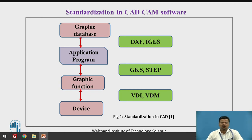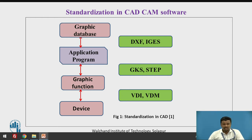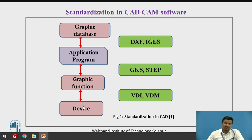The standardization required in CAD/CAM software involves different steps or cycles. For example, it consists of a Graphic Database which works as a library. It consists of different types of tools, toolbars, and icons with which the user can develop a 2D or 3D model of any mechanical component. It also consists of an Application Program, which is interconnected to the Graphic Device and Graphic Function. Graphic Function consists of Interactive Computer Graphics, and all these are connected to a device — the graphic software installed on a computer or laptop — for which there is a requirement of Data Exchange Format.